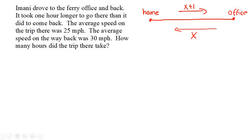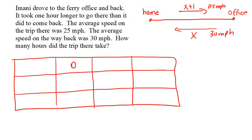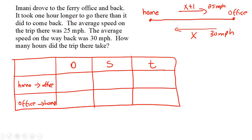The average speed on the trip there was 25 miles per hour, and the average speed on the way back home was 30 miles per hour. How many hours did the trip take? Once again, we use a table: distance, speed, and time — home to office and office to home. Going from home to the office, the time is x plus one and the speed is 25. Going from the office to the home, the time is x and the speed is 30.